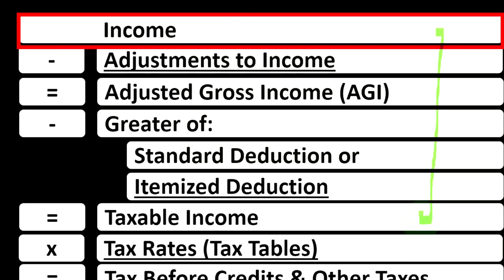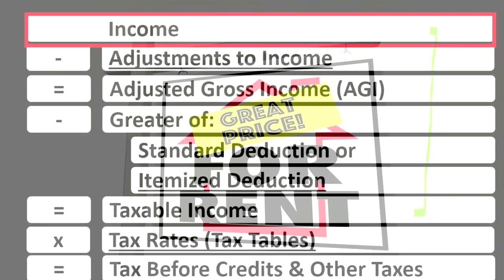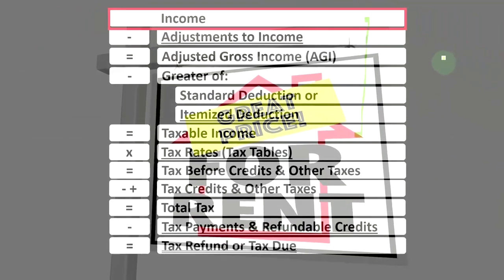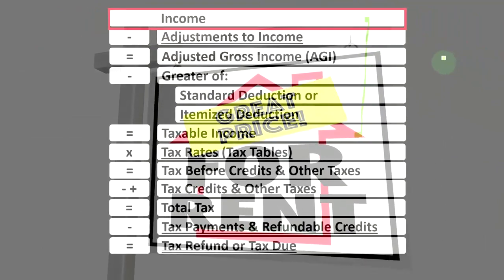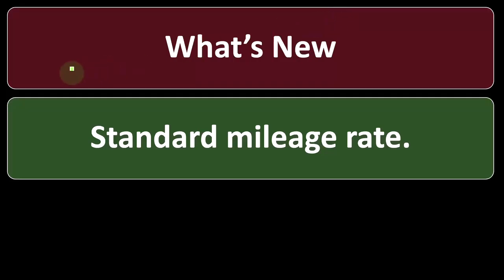One of those is the Schedule E for rental property, which is an income statement in and of itself — rental income minus rental expenses. The net rental income flows into Line 1 income of our income tax formula. Let's start off by thinking about what's new with rental properties.